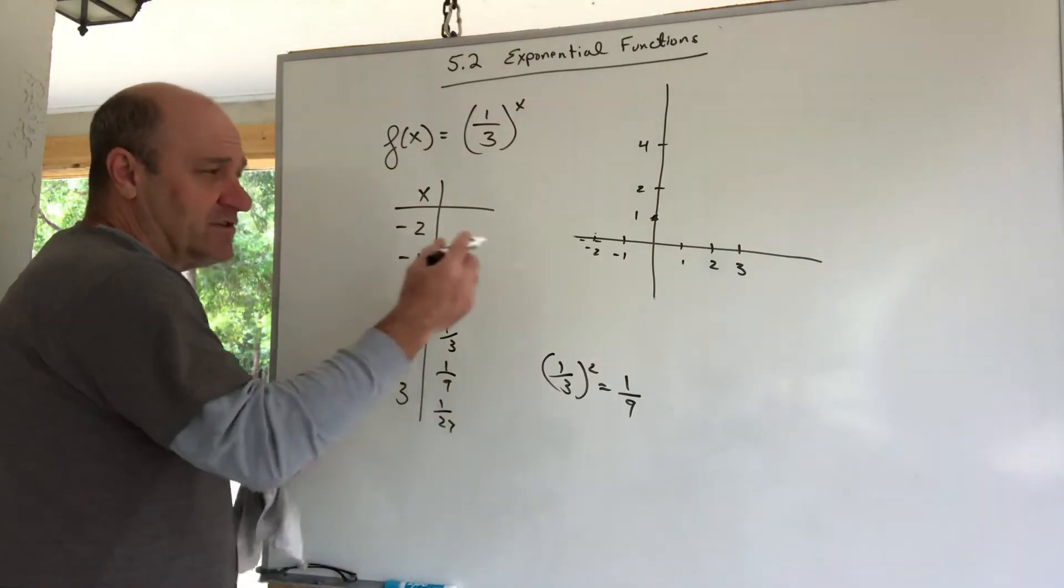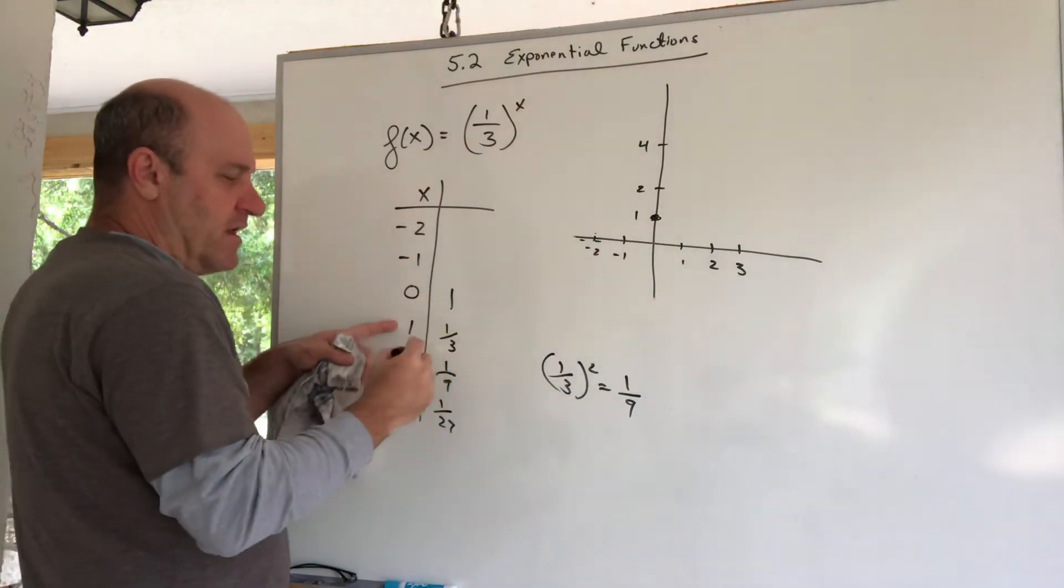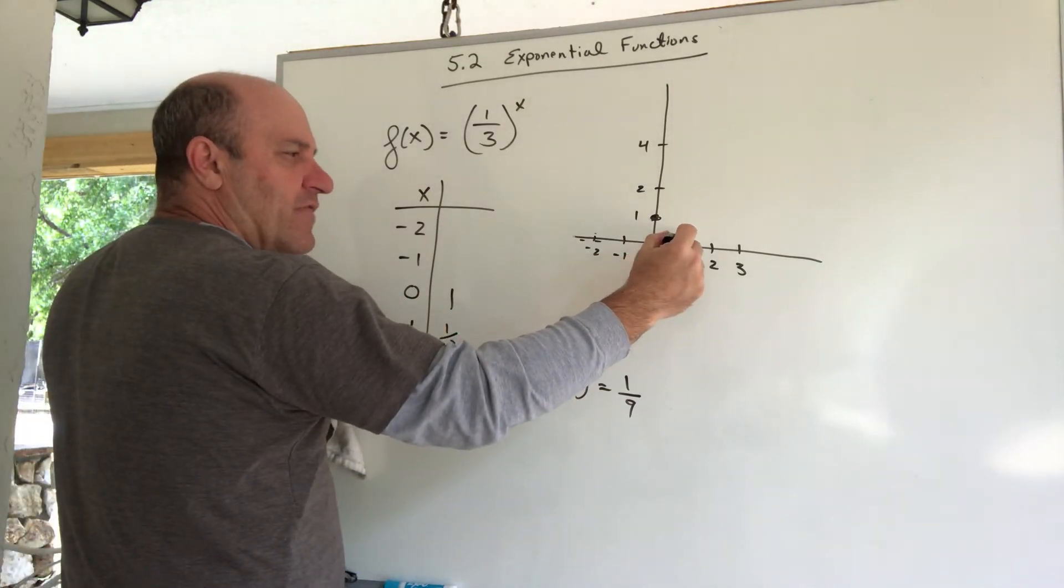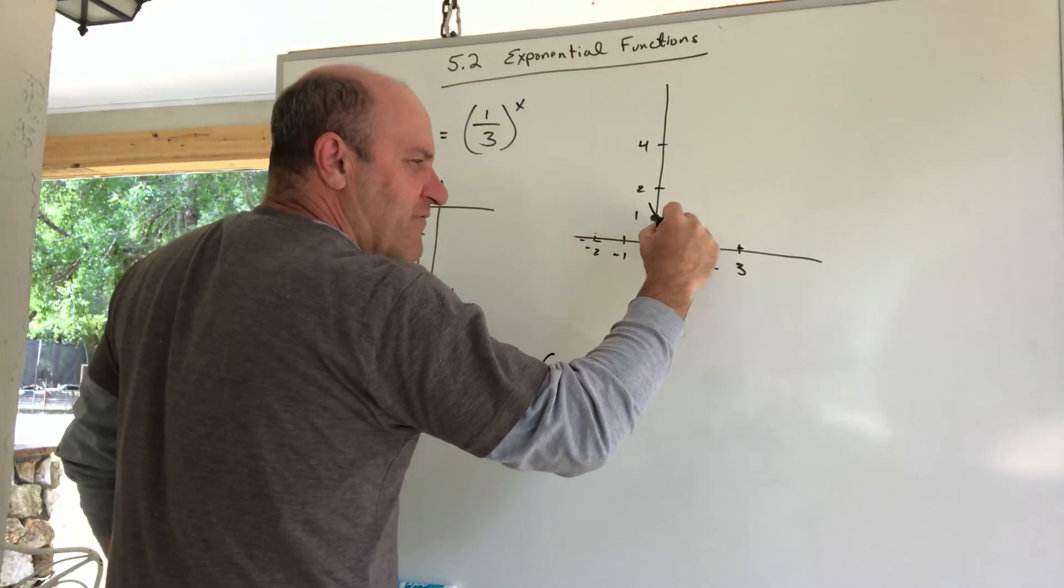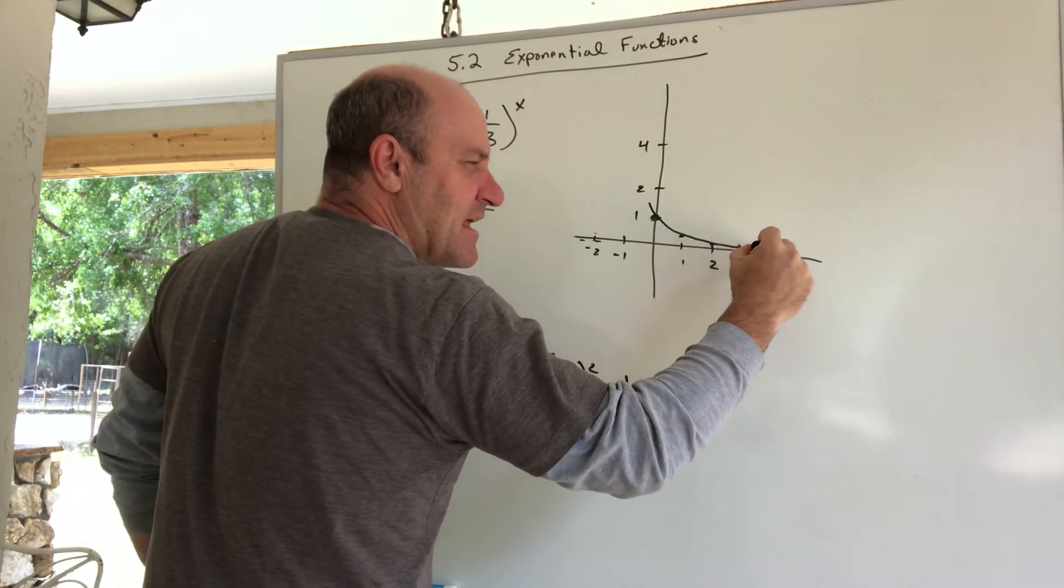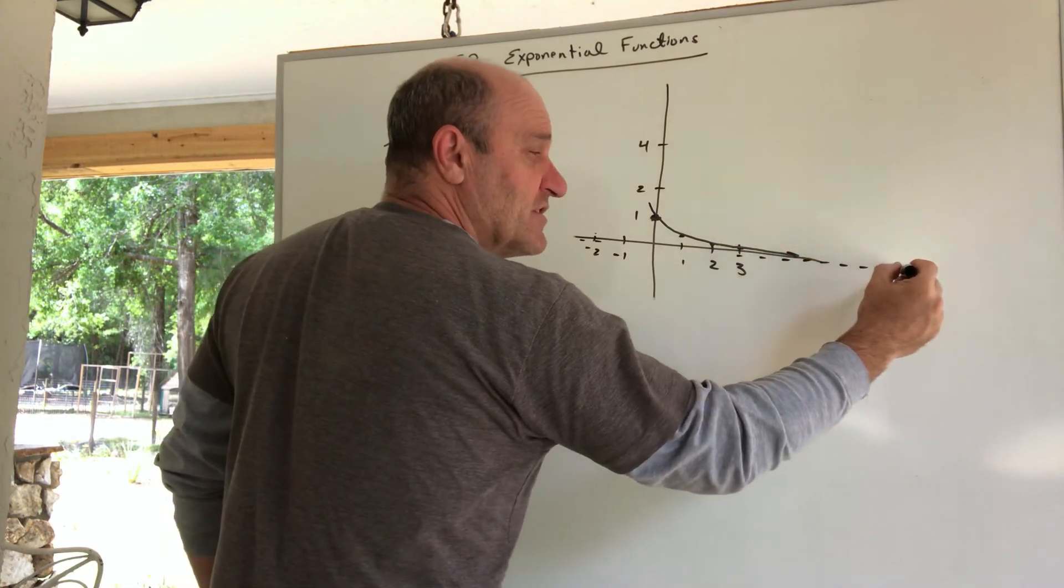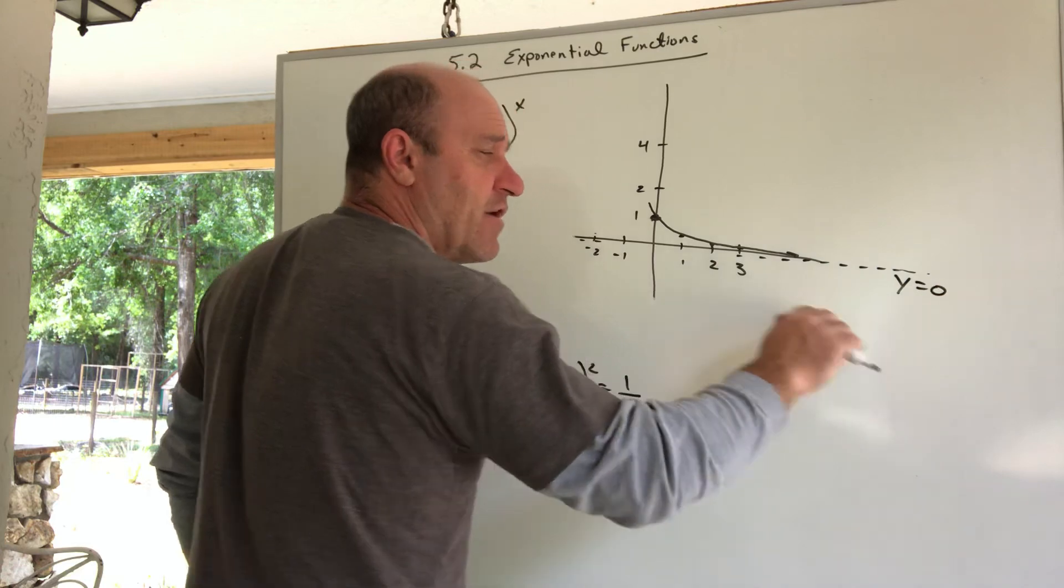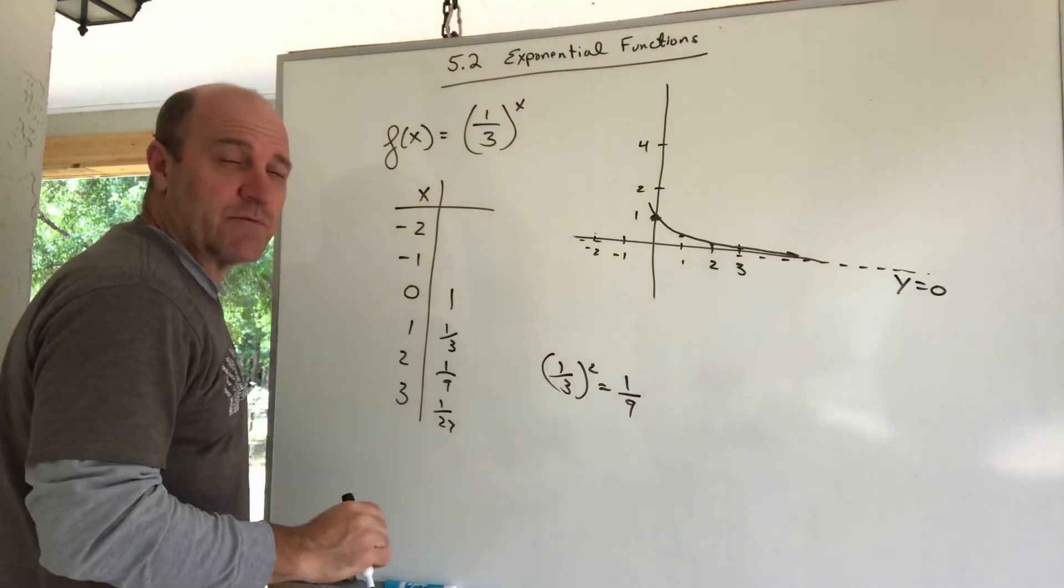Let's plot this. Zero, one, that was this point. When I plug in a one, I got a one third. When I plugged in a two, I got a one ninth. I got a one twenty seventh. So this graph is not growing. It's decaying, decreasing exponentially toward this asymptote. There's still this asymptote at y equals zero. It won't touch or cross. It'll get infinitely closer to zero.